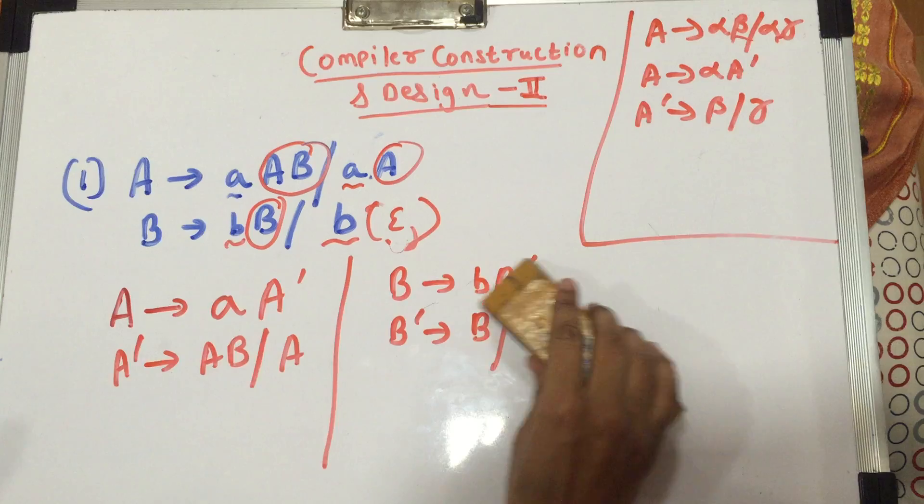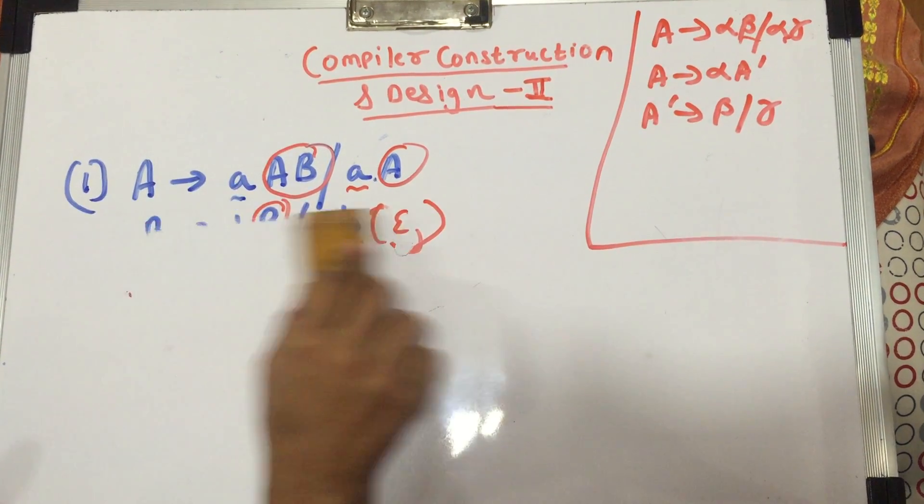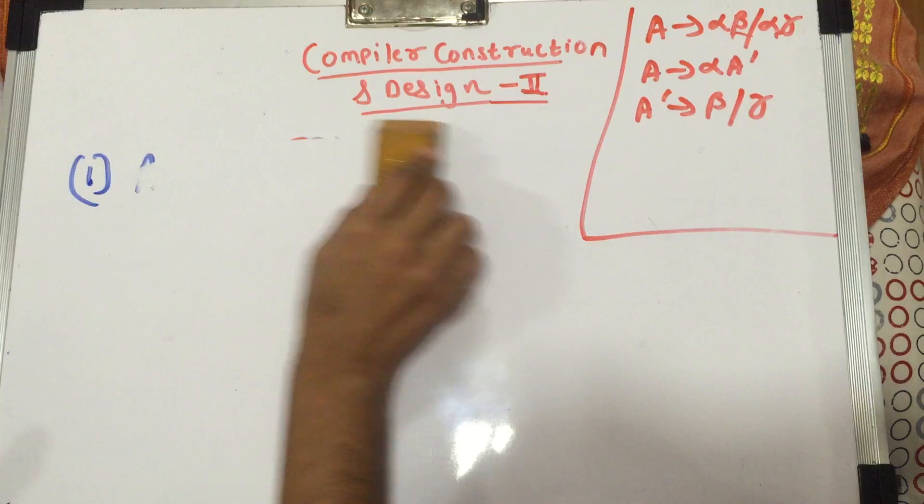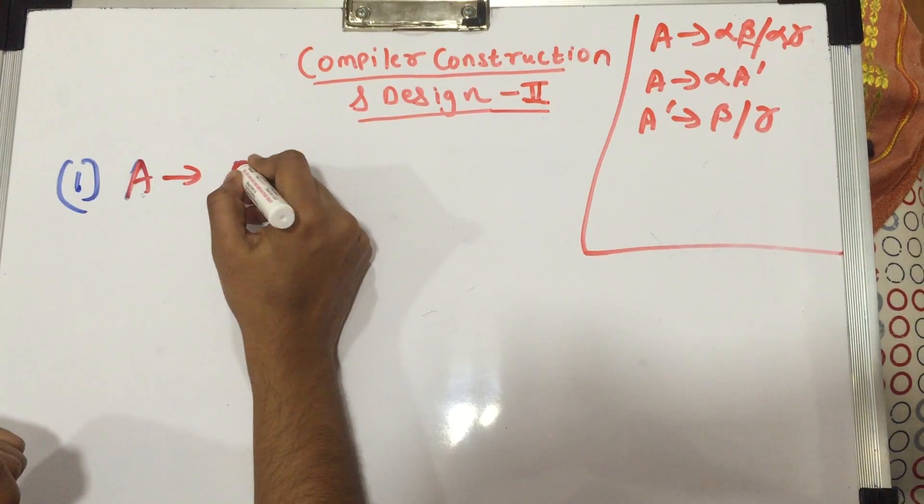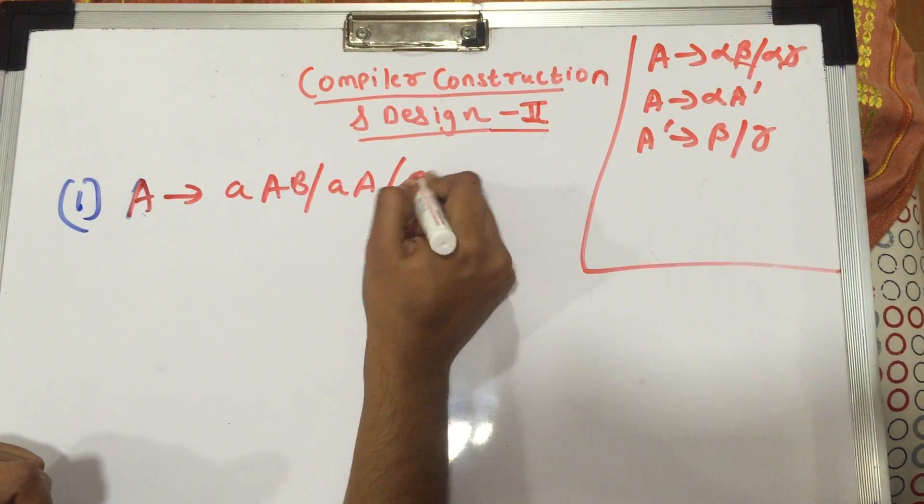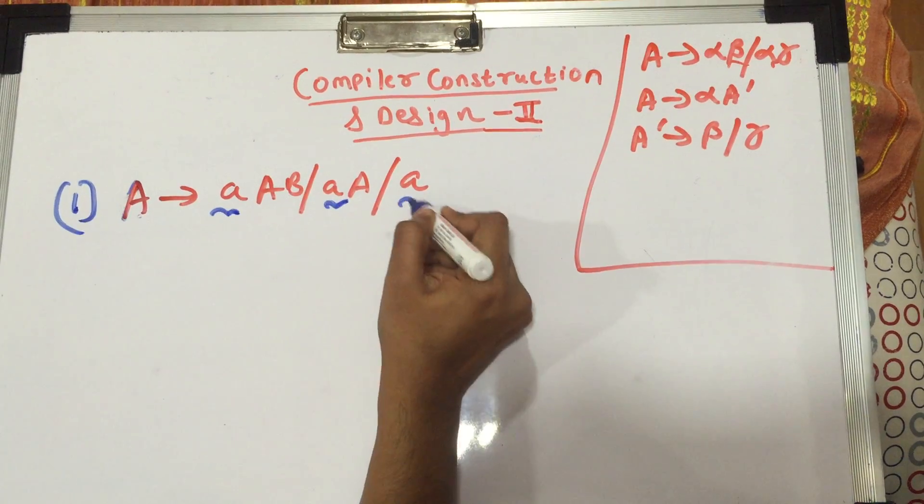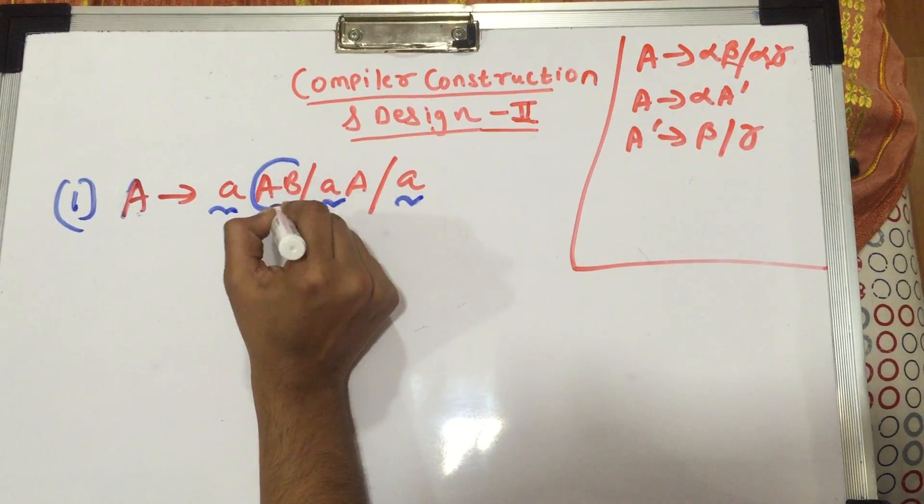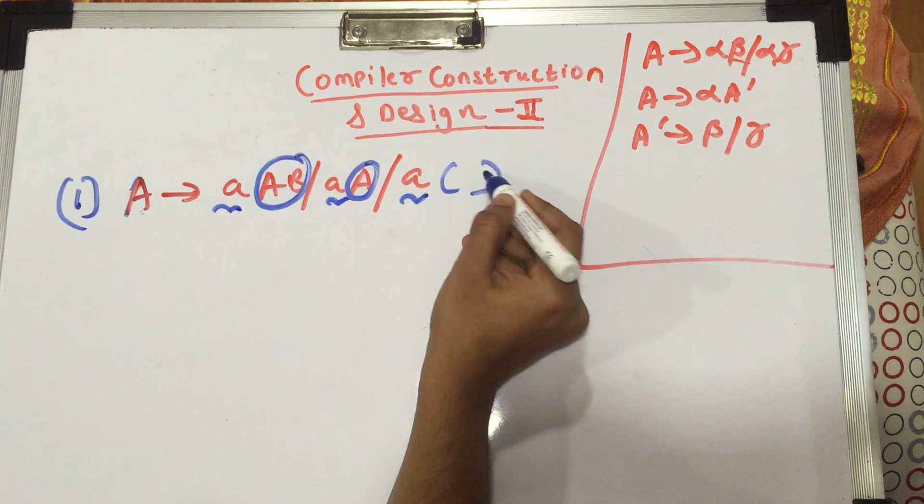The only takeaway from this is that whenever, suppose in this example itself, if I had A giving me aAB slash aA slash a, in this I would take out this a common from everywhere. The uncommon part would be aB here, it'll be capital A here, but what about here?